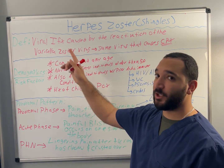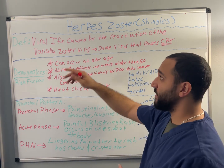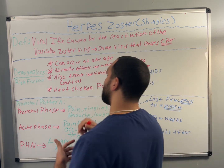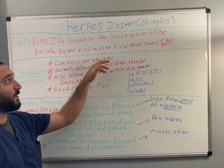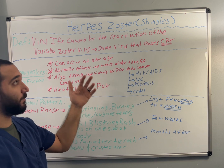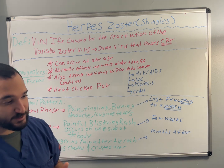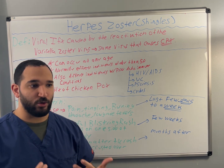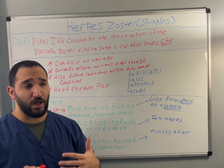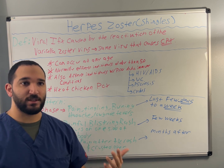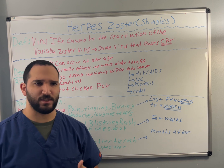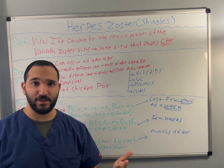Herpes zoster, also known as shingles, is a viral infection caused by the reactivation of the varicella zoster virus, also known as the chickenpox virus. Typically, after the chickenpox virus has gone away in early childhood, it remains dormant, and later on in life it can reactivate due to stressors, age, and autoimmune conditions, causing shingles.